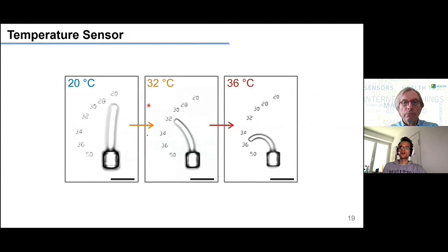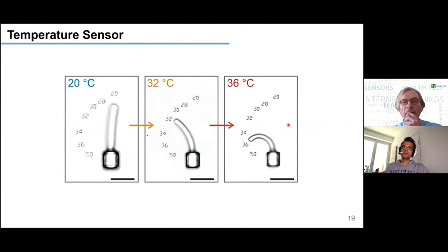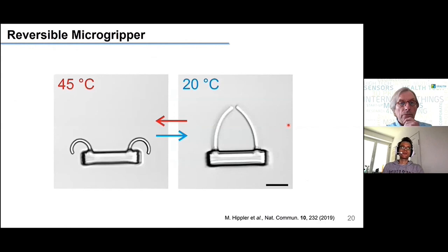Thinking about soft robotics, one example is building an analog micro thermometer at the micro scale — just one of these beams that points to the temperature of the water bath, because the response is so predictable and robust that you can write the temperature numbers on the substrate using direct laser writing. A more practically useful example goes in the direction of grippers: by placing two of these biomaterial beams next to each other, you can make a gripper that can trap particles or actuate things as a function of temperature.